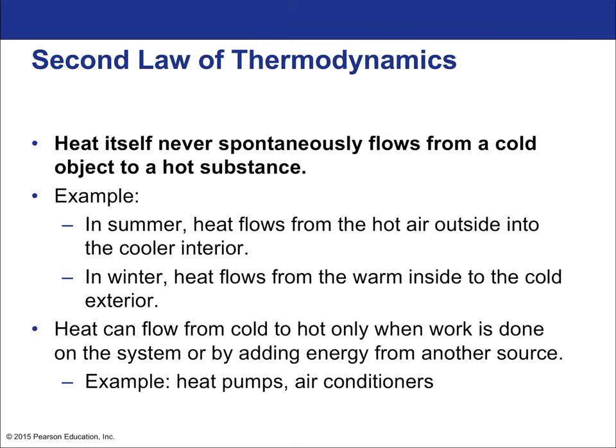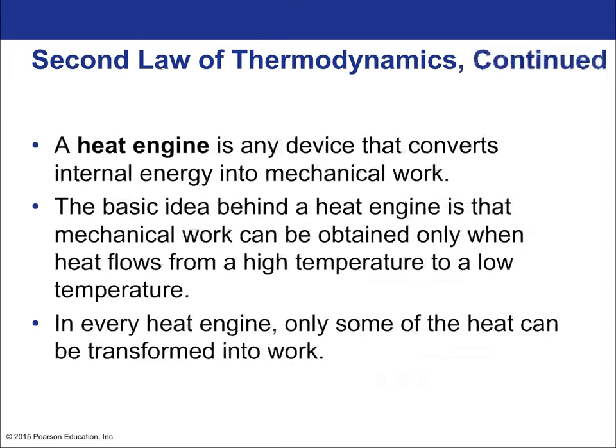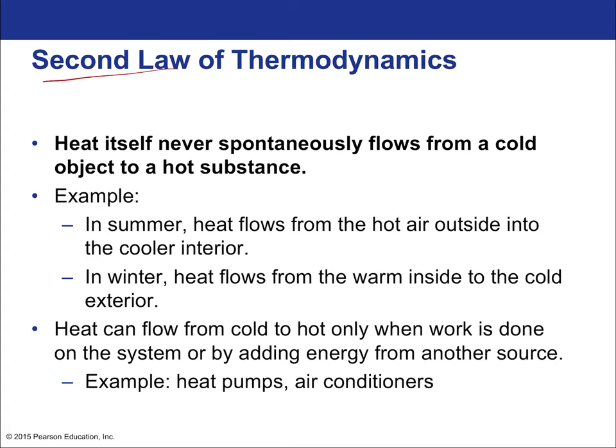Moving on to the second law: heat never spontaneously flows from a cold object to a hot object — it only flows spontaneously from hot to cold. We stated this in the previous chapter and just took it as a rule. This is now the formal law. The second law of thermodynamics is hard to pin down because there's no one equation to represent it — it's usually written as sentences, with different ways of expressing it depending on your focus. One totally valid way: heat never spontaneously flows from cold to hot; it only flows spontaneously from hot to cold.